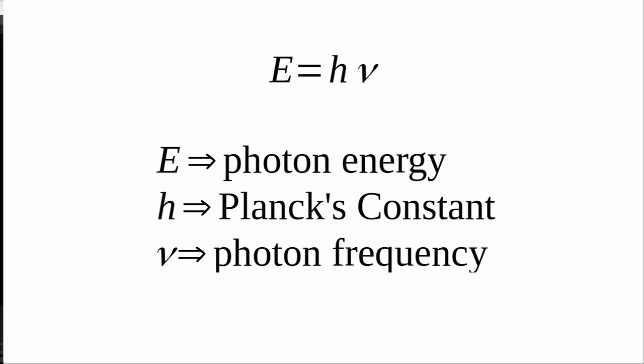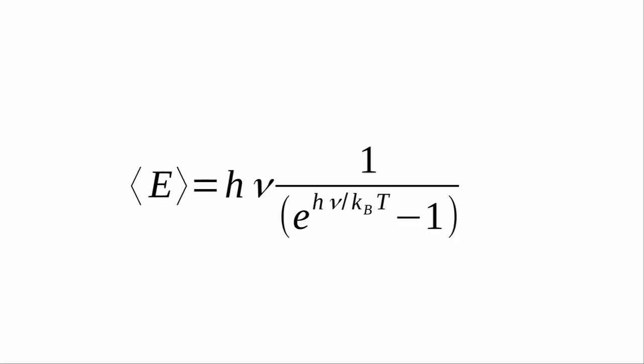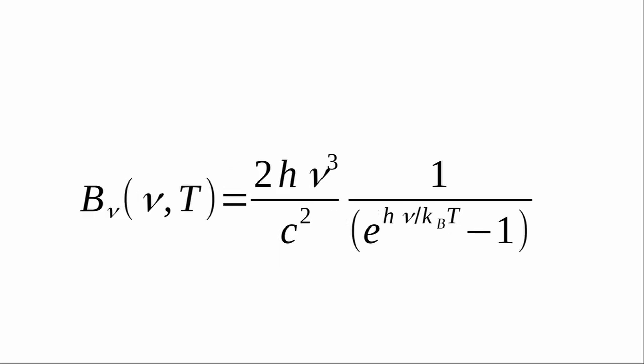If we do a bunch of statistical physics, we obtain this equation. This tells us the expected amount of energy for a given energy mode. Finally, through the use of some black magic, we obtain Planck's solution to the ultraviolet catastrophe.